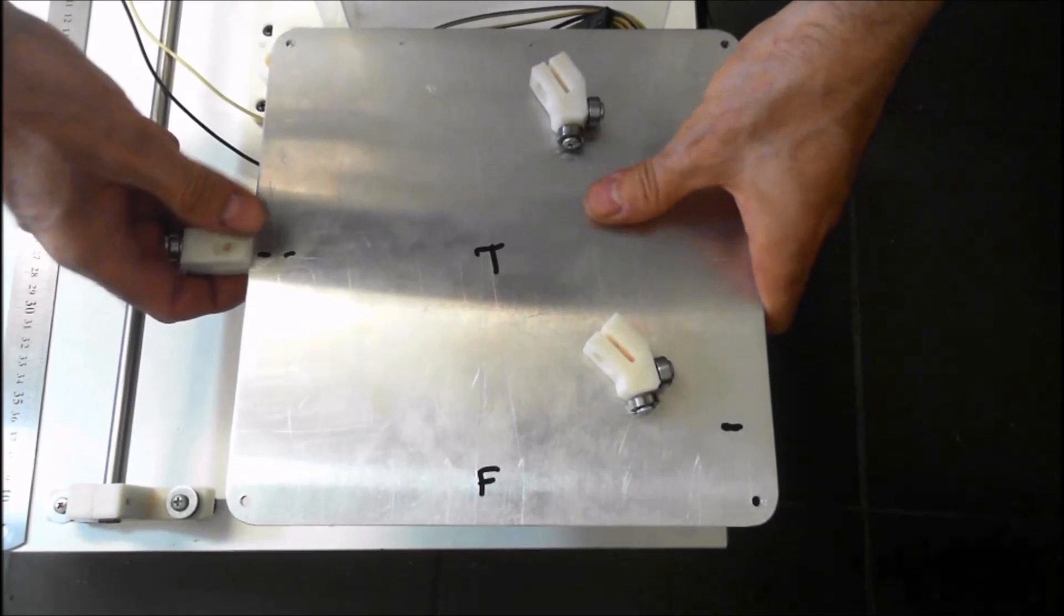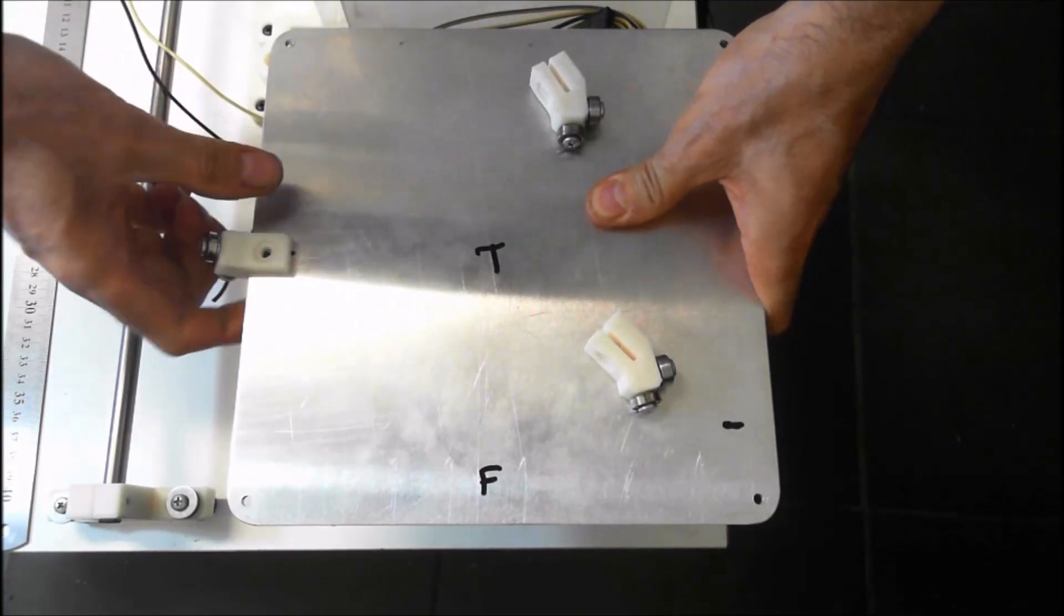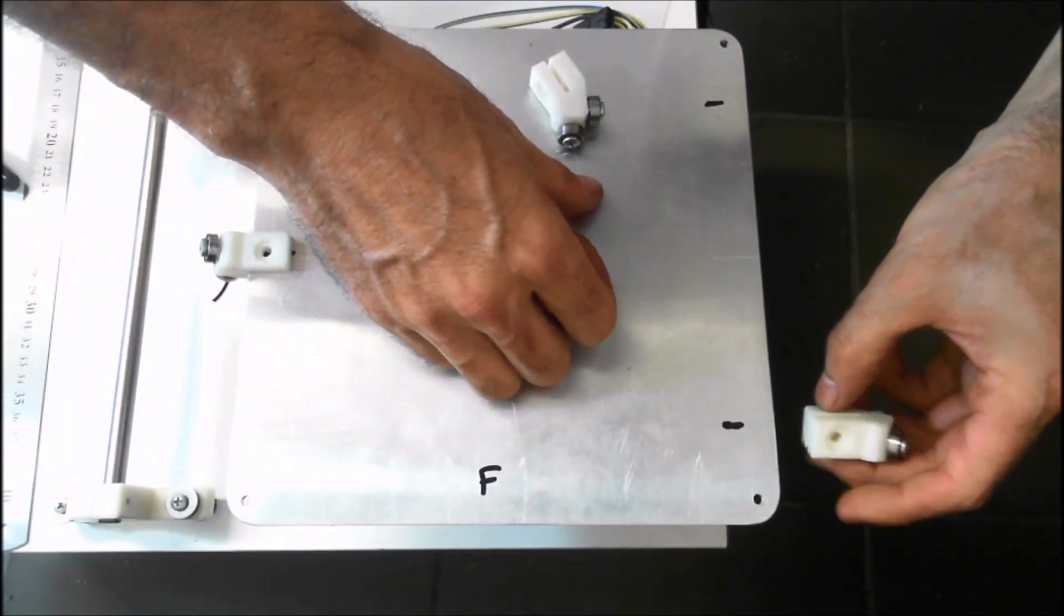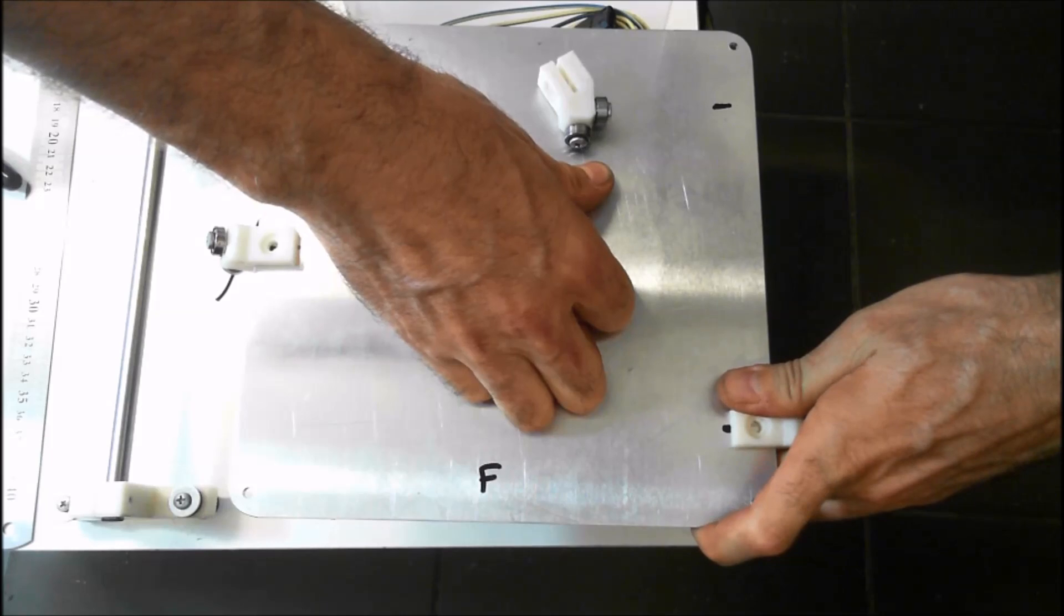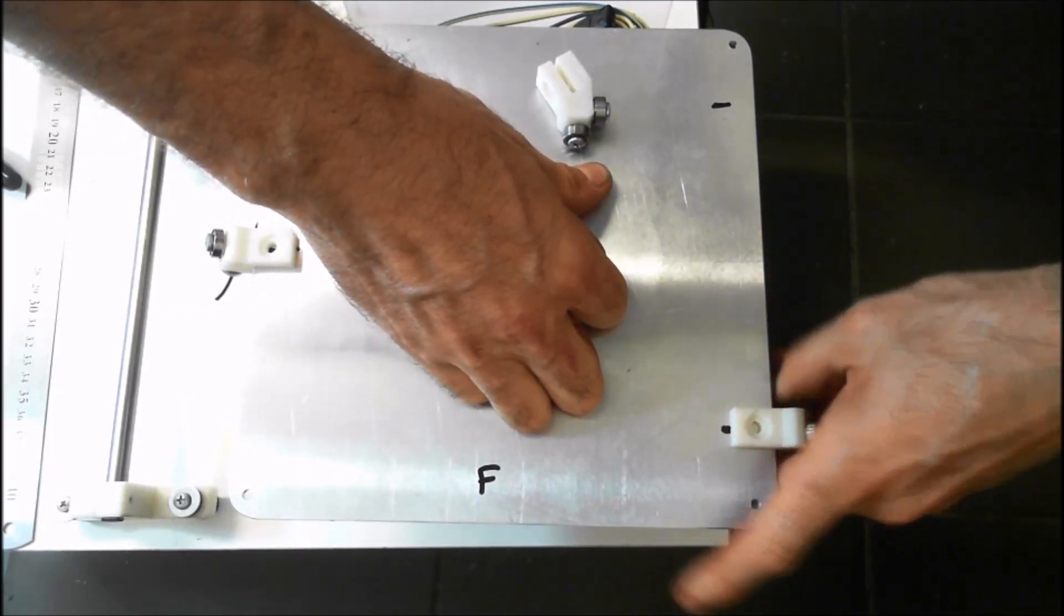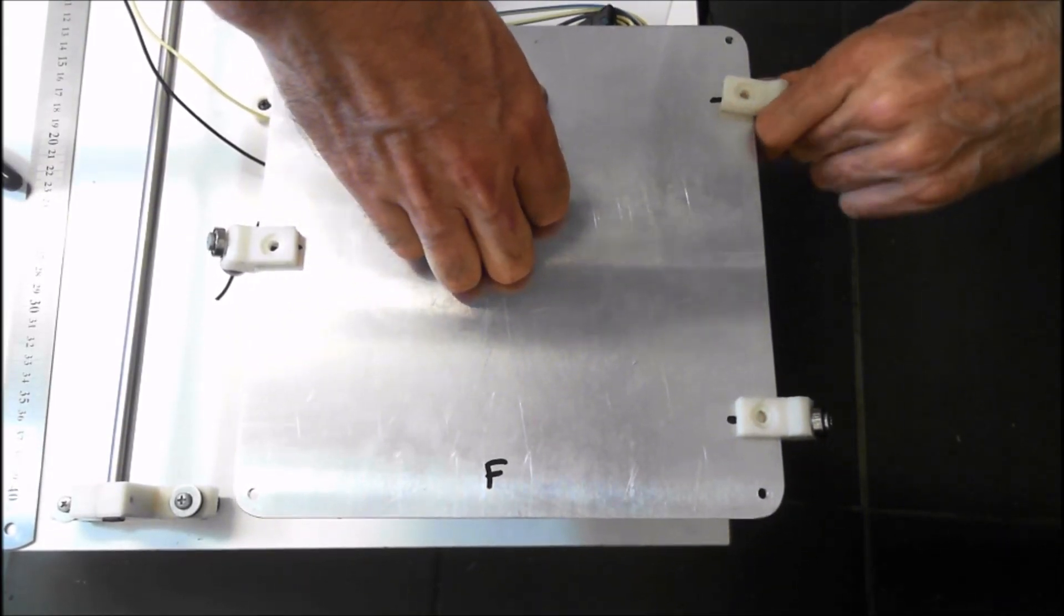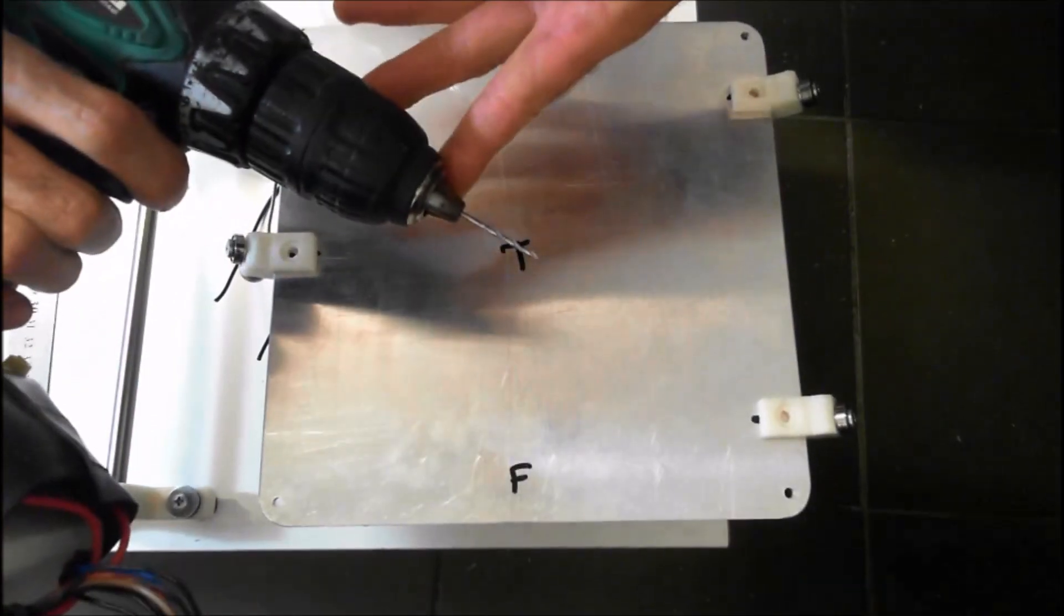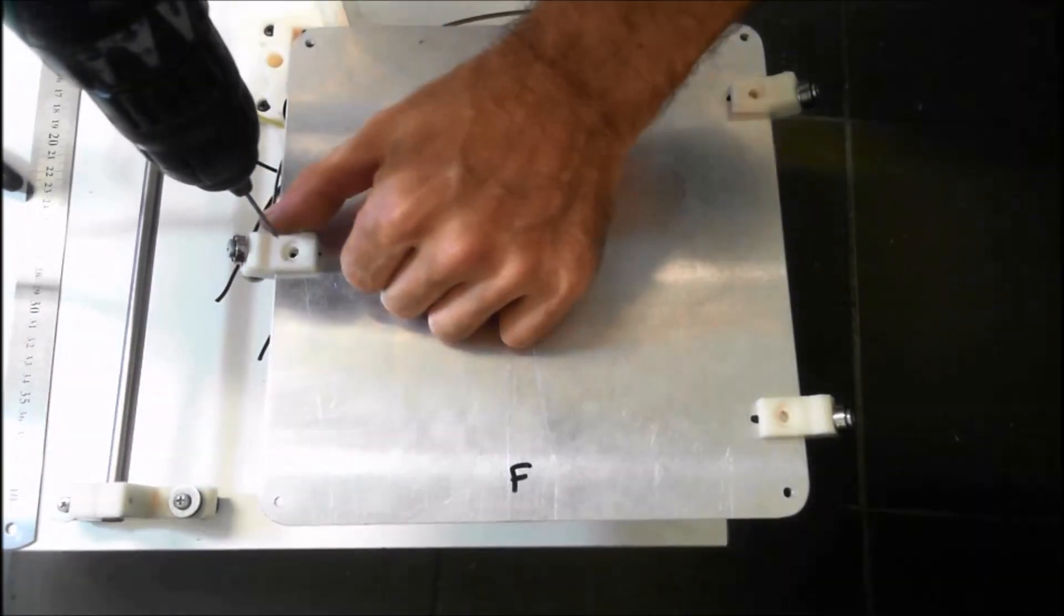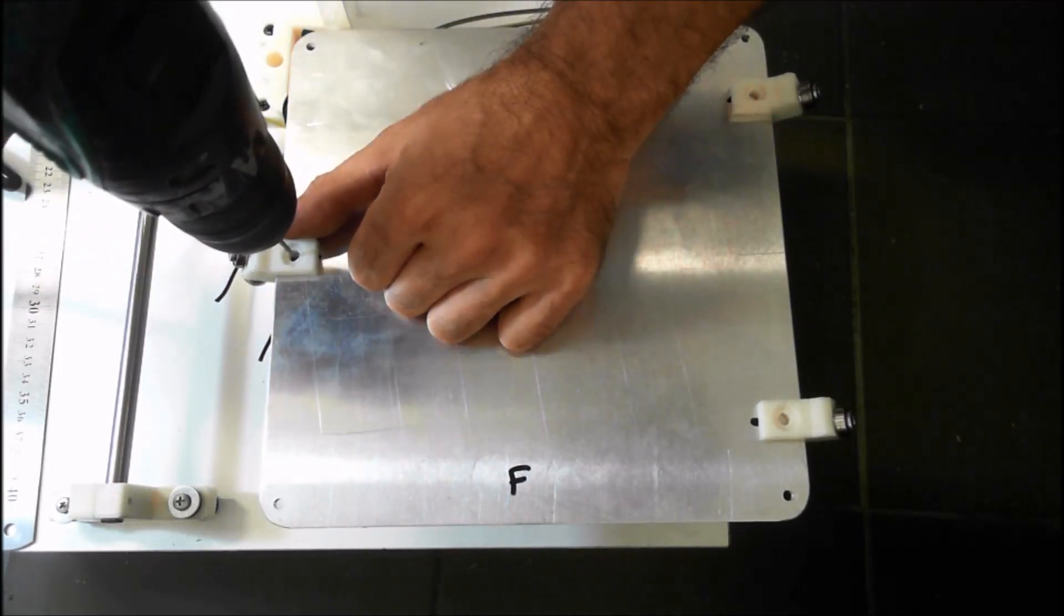We can install our bearing mounts and drill the pilot holes. We've organized a two millimeter drill bit just for our pilot holes, and we're just going to mark the positions for those holes in the center of these bearing mounts.